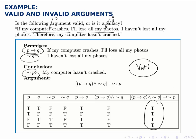This is an example of what's called contrapositive reasoning, which says that if P implies Q and Q hasn't happened, then P must not have happened. Because if my computer crashes, I'll lose all my photos — I haven't lost all my photos, so if my computer had crashed, I would have. The fact that I haven't proves my computer hasn't crashed. This is a valid form of reasoning known as contrapositive reasoning, because it uses the contrapositive.